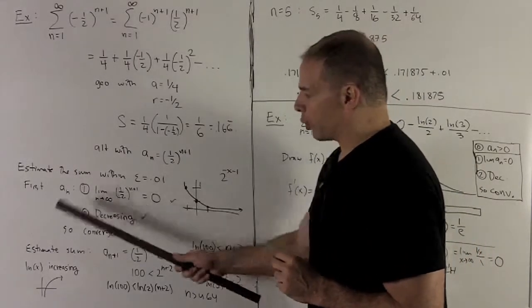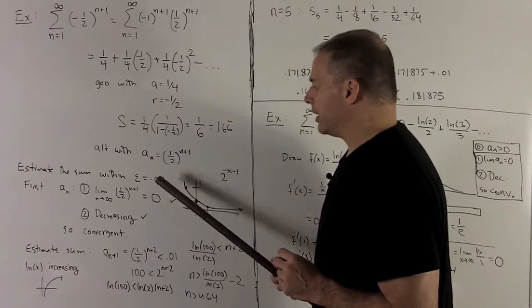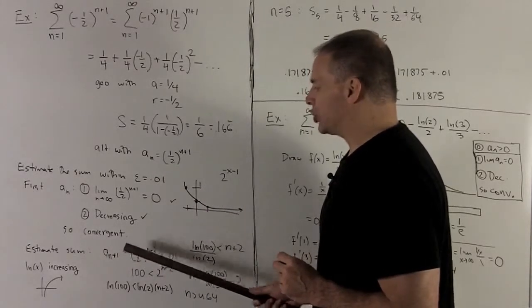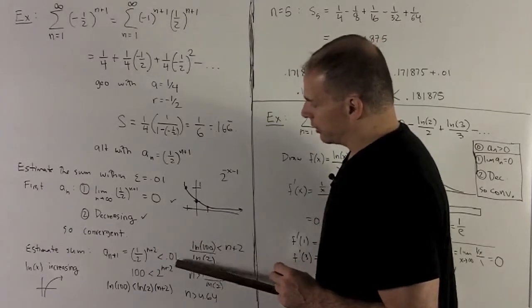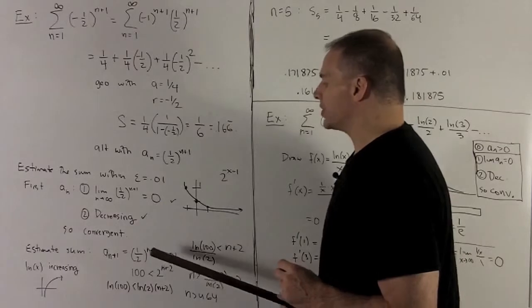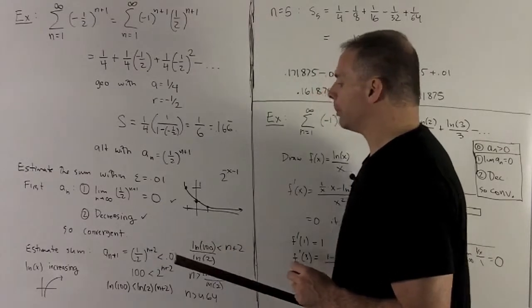All right, I have my rule says you have your epsilon. You're going to solve to figure out an a sub n plus 1 that gets you within the 0.01. We want that less than 0.01. So this is equal to 1 half to the n plus 2 power.